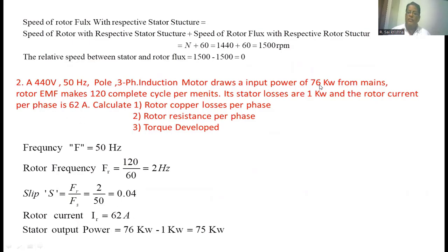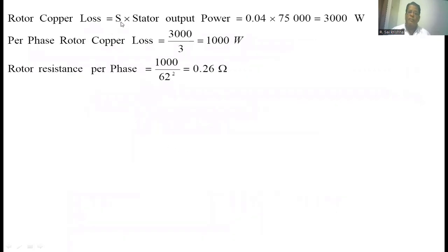The motor draws input power of 76 kilowatts from the mains and stator losses are 1 kilowatt. So the stator output power = 76 − 1 = 75 kilowatts. Now to calculate the rotor copper loss: rotor copper loss = slip × rotor input = 0.04 × 75,000 = 3000 watts. This is the three-phase rotor copper loss. Per-phase power = 3000 / 3 = 1000 watts.